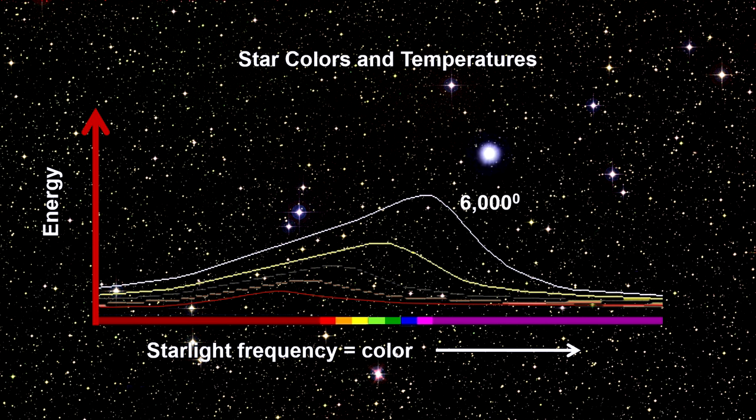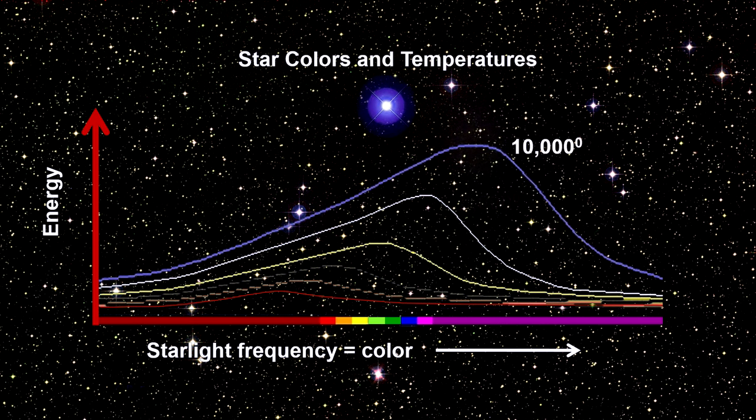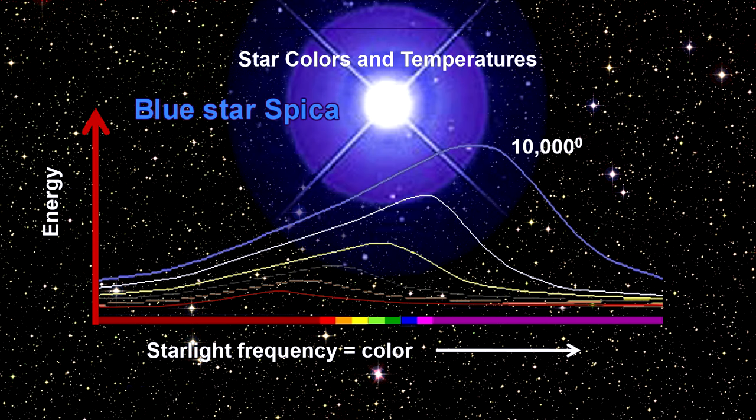Around 6,000 degrees, it is turning white. The star Sirius A is an example of this. And by 10,000 degrees, it has a distinct bluish color. Spica is a good example of a blue star.